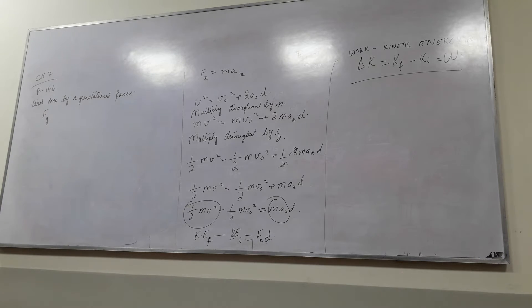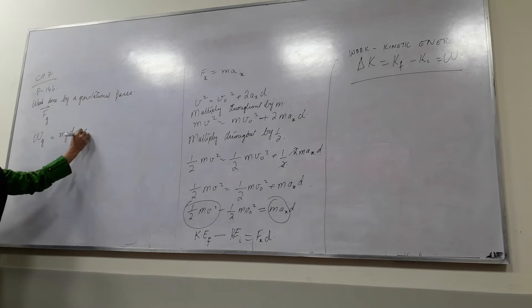So the force is Fg, and therefore the work done will be Wg equals mg d cos phi. What did you notice?